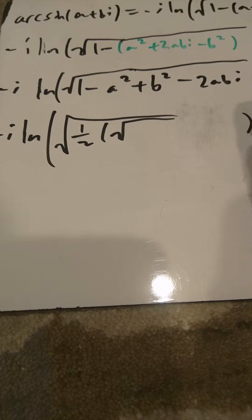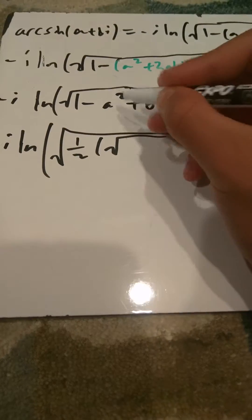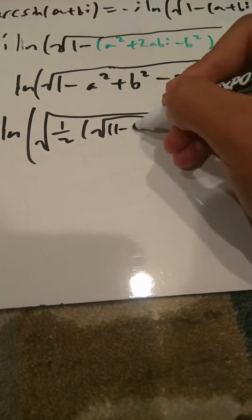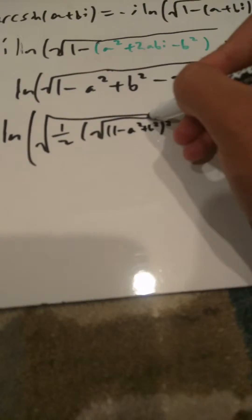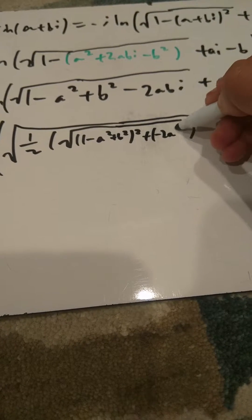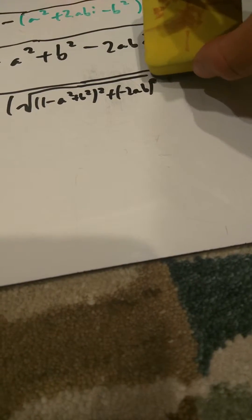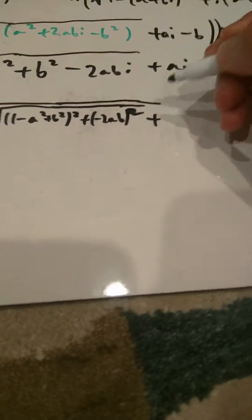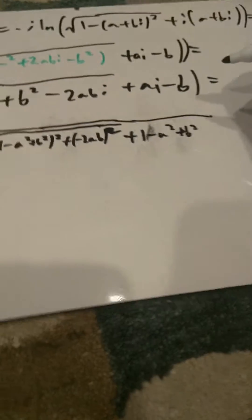So we have the square root of one half times the square root of: one minus a squared plus b squared, all squared, plus negative 2ab squared. Then we have plus the real part, which is plus one minus a squared plus b squared. And the complex part — because the square root of a complex number cannot be real — plus ai minus b.